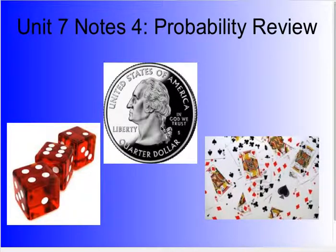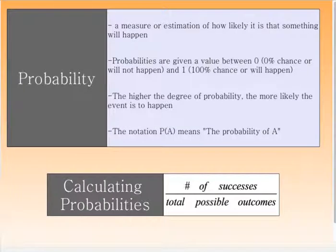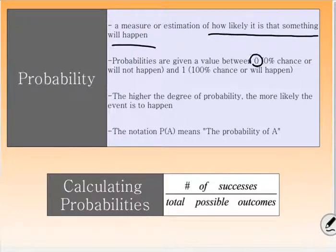Okay, ladies and gentlemen of algebra, you're looking at unit 7 notes, talking a little bit about probability. Some of you might have seen probability before, maybe remember one or two things, but it's good to go over the details. Probability just measures how likely something is going to happen. Probabilities are given a value between zero and one — zero means there's absolutely no possible way that it's going to happen, one means it is inevitable.